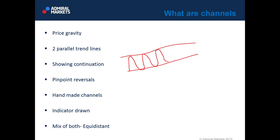Usually, channels are showing continuation in the trend direction, but a channel can also show you a potential breakout. When we talk about breakouts of channels, we refer to indicator-based channels such as Donchian channels, or we can also use moving average channels. We can also use equidistant channels, which is definitely my favorite. Channels are a very useful tool, no matter which kind of channel you want to use.